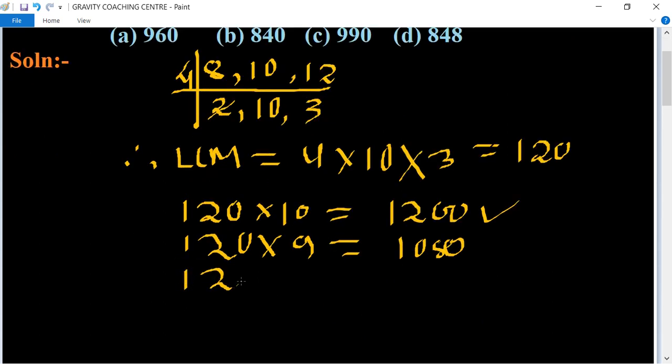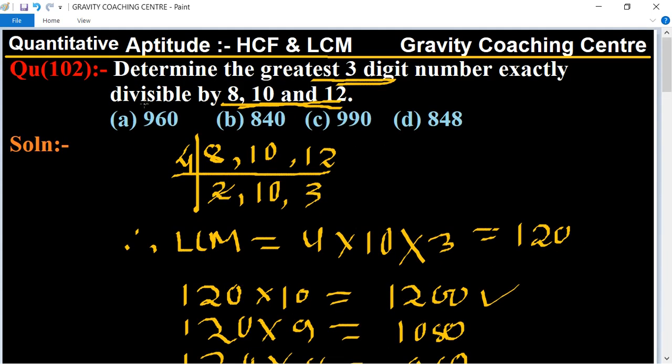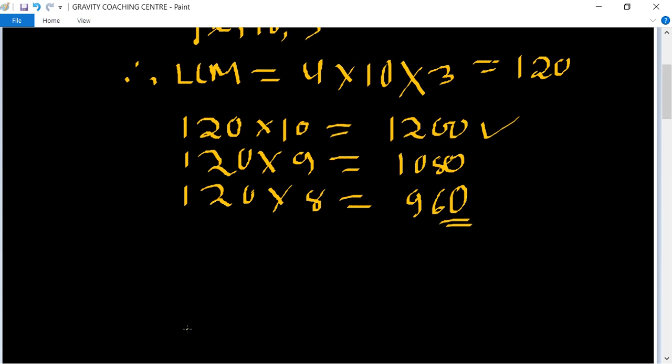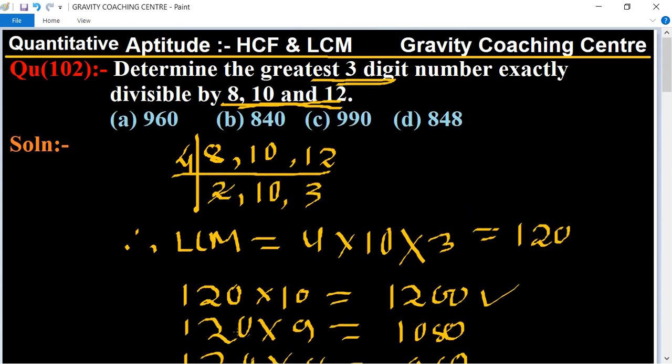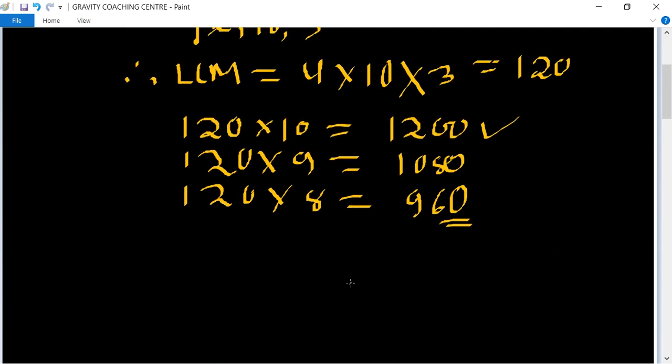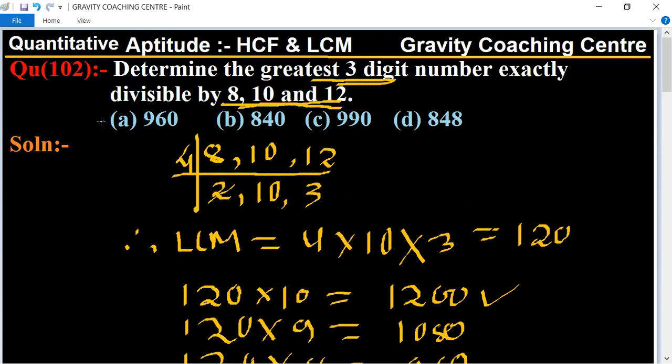Now we multiply by 8 and its product is 960, which is the largest three digit number divisible by the given numbers. So option 960 is the correct answer.